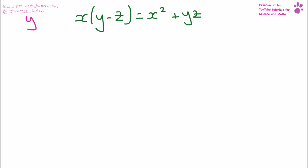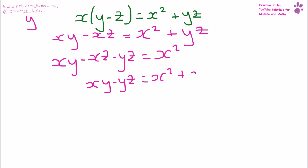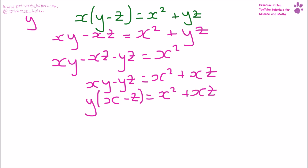Here I want to make y the subject of the formula. I'm going to multiply out these brackets: x·xy − xz = x² + yz. I'm going to get all my y's on one side: xy − xz − yz = x². Get everything that doesn't have a y in it over to the right-hand side: xy − yz = x² + xz. Now I have all my y's on the left-hand side. Take y outside into a bracket: y(x − z) = x² + xz. Now I have something times by y, so I can divide: y = (x² + xz) over (x − z).